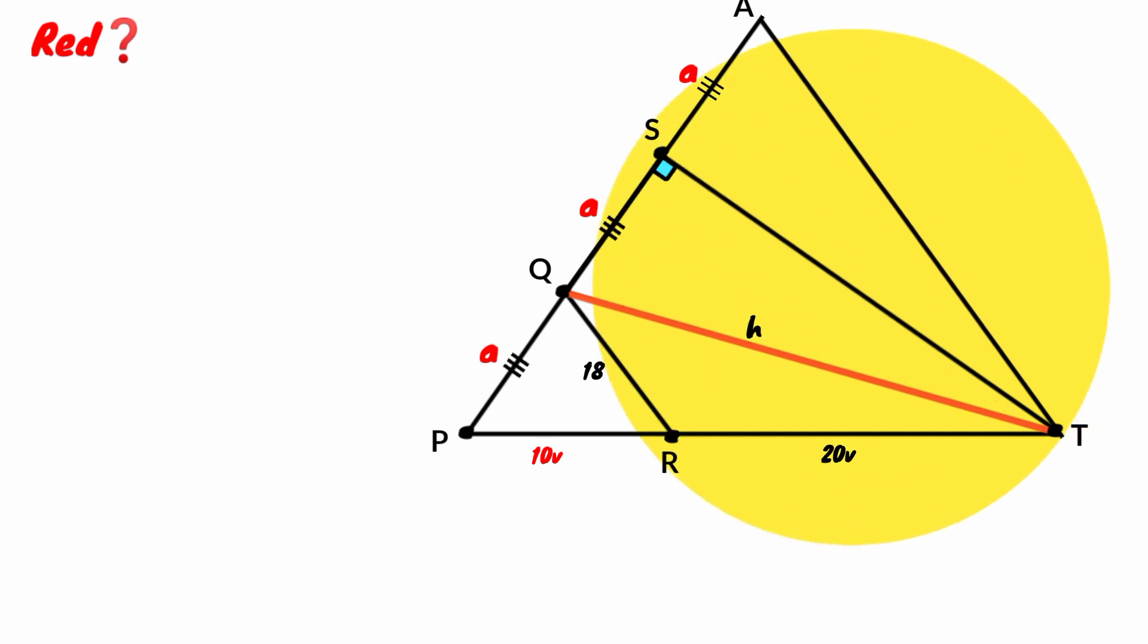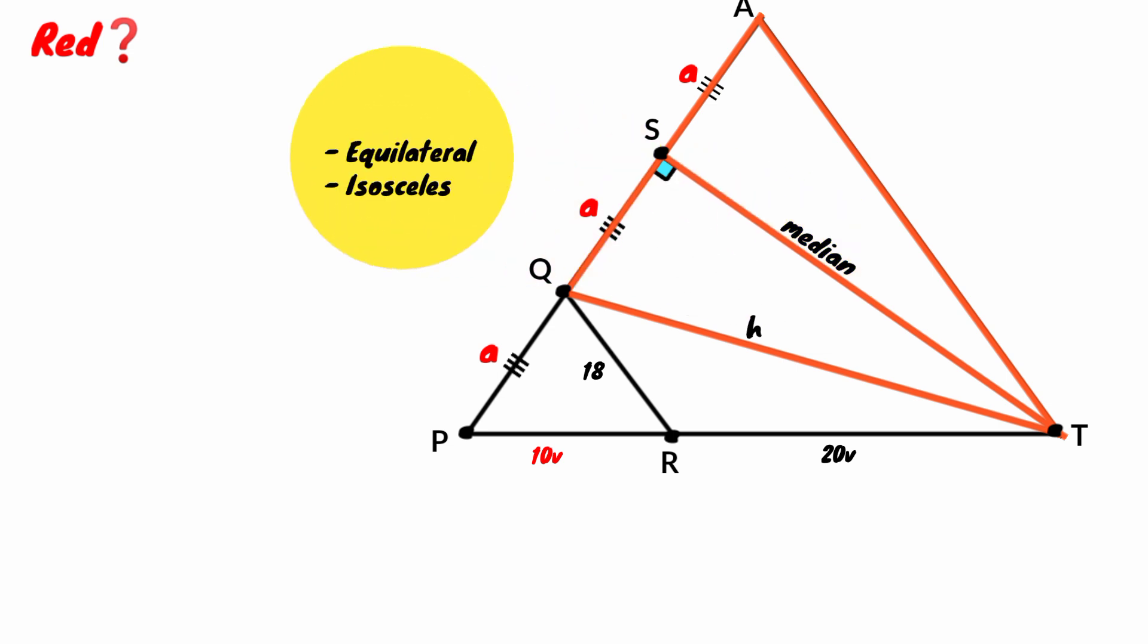Let's take a look at this triangle. We have ST bisecting this side at right angles. That makes it a median of the triangle. The only two types of triangles that have a median bisecting the side at right angles are the equilateral triangle and the isosceles triangle. However, it doesn't matter which one it is.